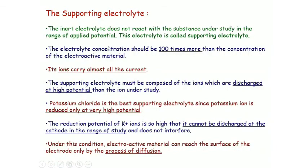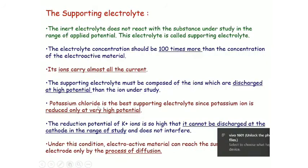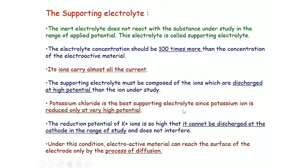K⁺ cannot interfere with the test cation under study in the range of applied potential. The reduction potential of the supporting electrolyte must be very high, and the reduction potential of KCl is very high — that is why it is the best supporting electrolyte. The reduction potential of K⁺ is so high that it cannot be discharged at the cathode in the range of study and does not interfere. That is why KCl is used as a supporting electrolyte in polarography.